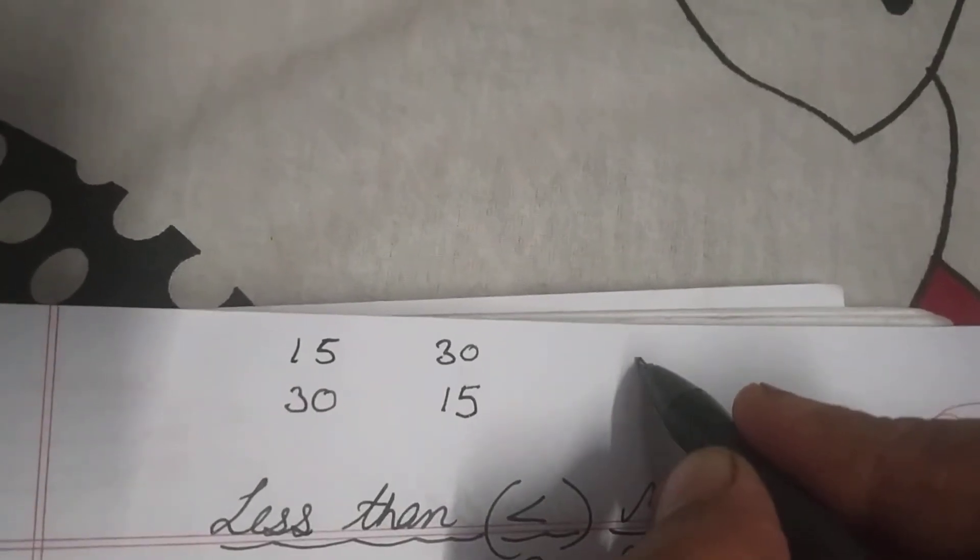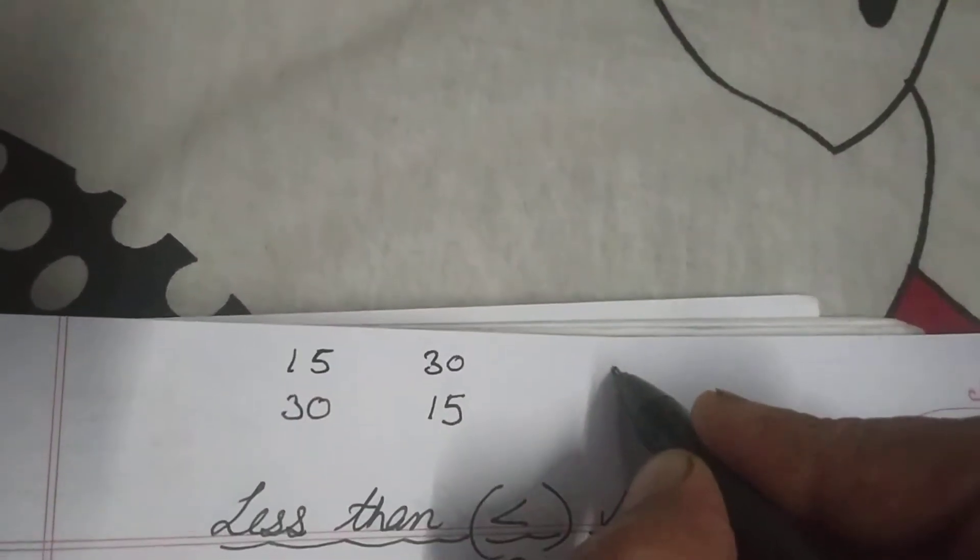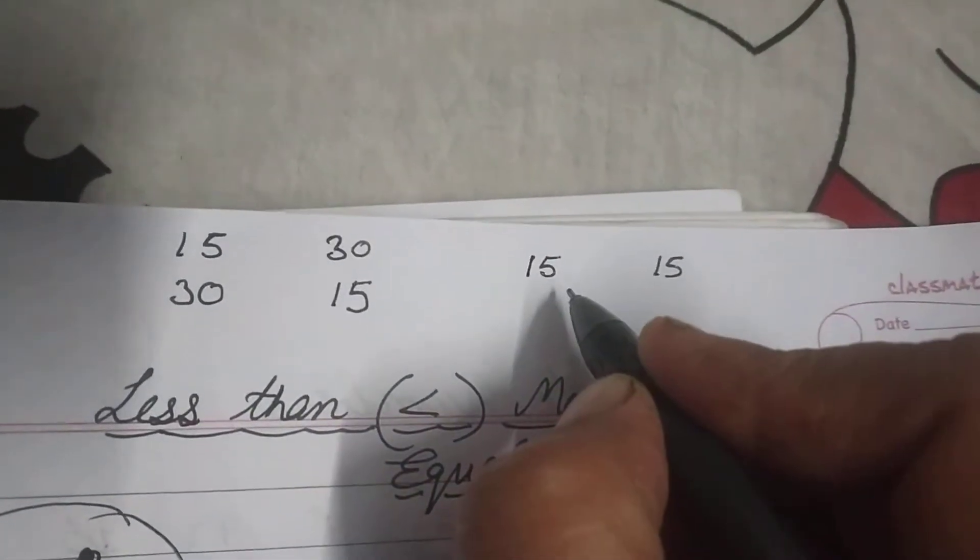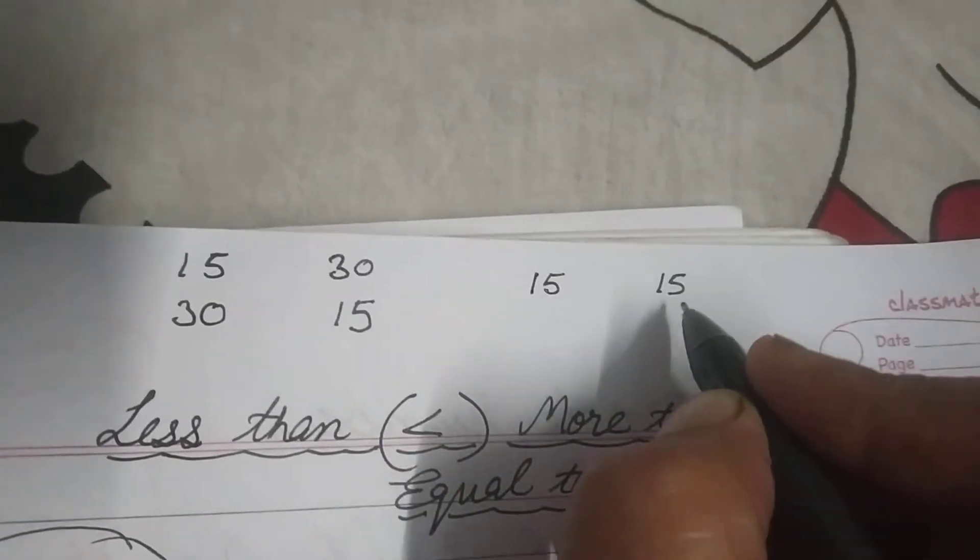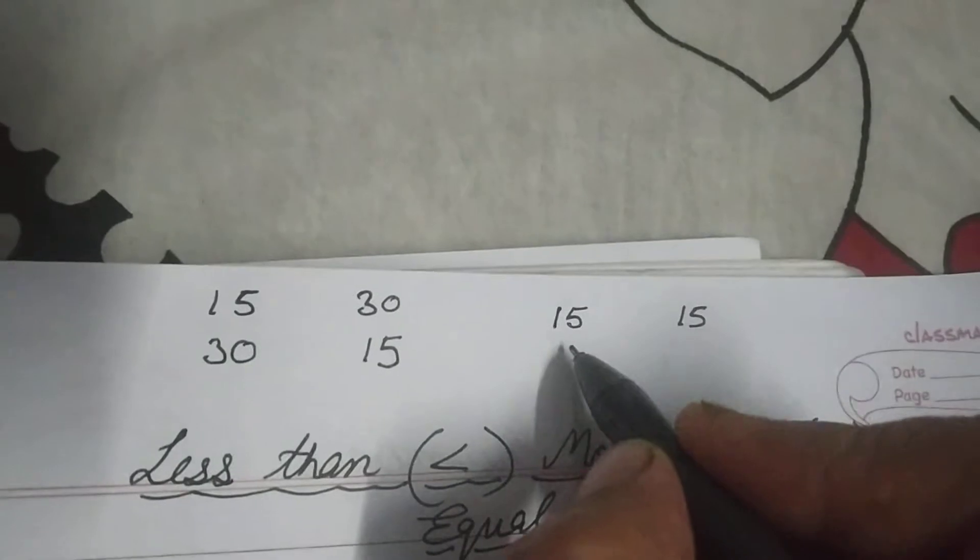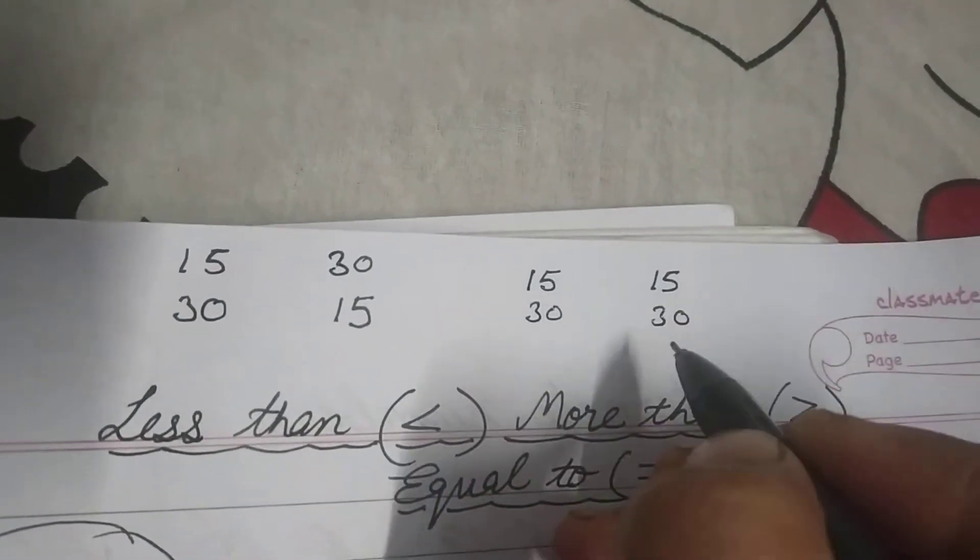And equal to means ki agar koji chize berabar hai. Agar main idhar bhi 15 likhun, or idhar bhi 15, that means these are equal. 15 is equal to 15, right? And agar main 30 likhun, 30 is equal to 30.